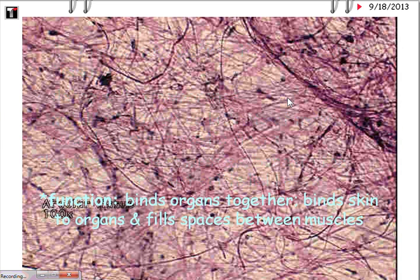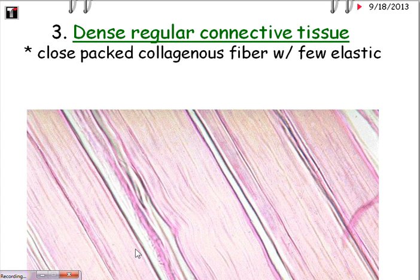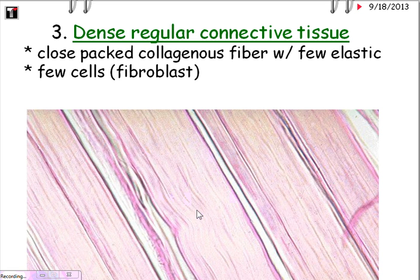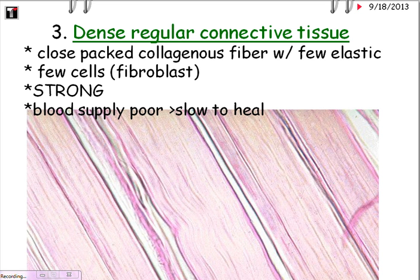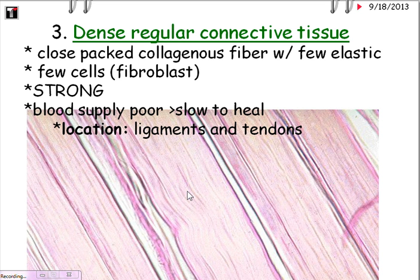The opposite of loose is dense connective tissue. This is dense regular connective tissue — notice how the collagenous fibers, with a few elastic fibers, are packed closely together in parallel. There are very few fibroblast cells visible. These fibers are very, very strong, but they have a very poor blood supply, so they are slow to heal. Location: ligaments and tendons. Those who have had ligament or tendon damage know how slow they are to heal.